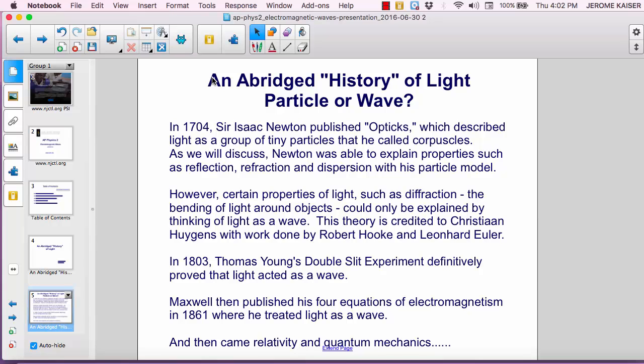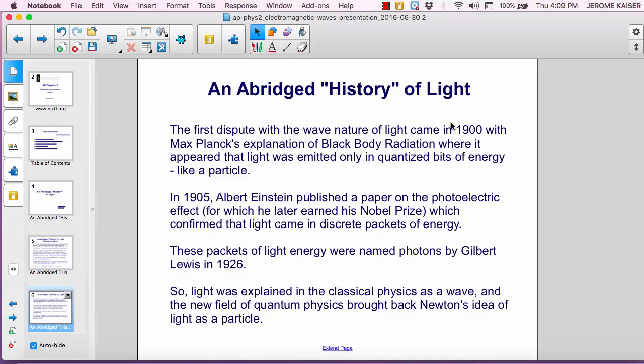And then came relativity and quantum mechanics. The first dispute with the wave nature of light came in 1900 with Max Planck's explanation of black body radiation, where it appeared that light was emitted only in quantized bits of energy, like a particle.